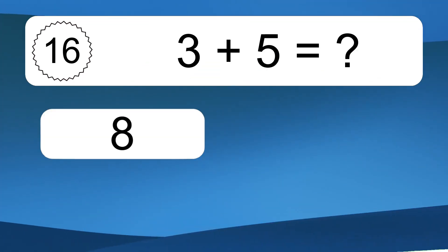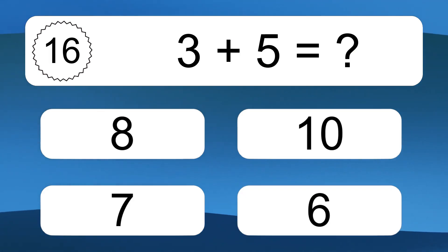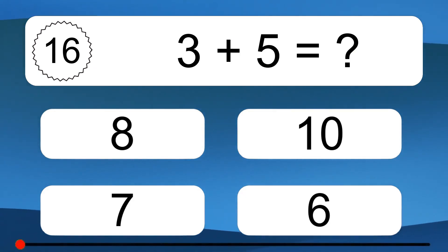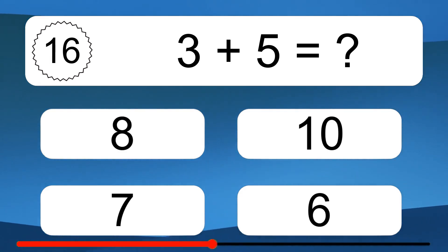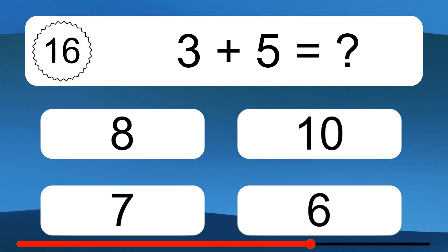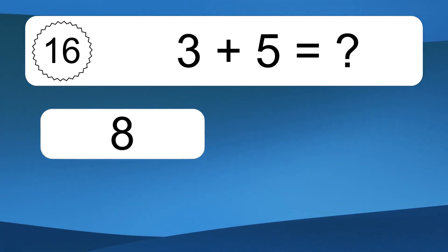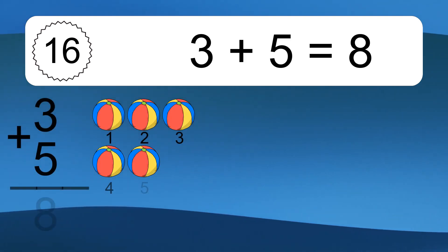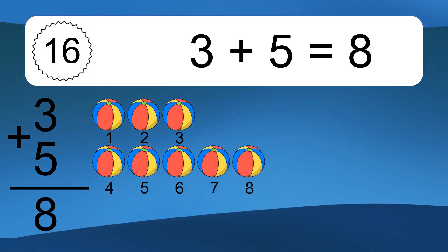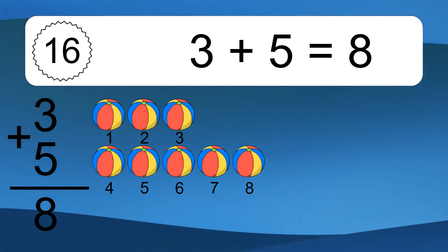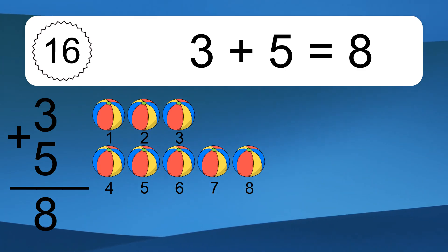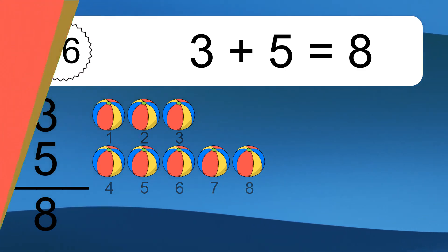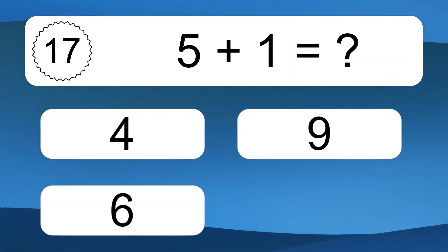3 plus 5 equals what? 3 plus 5 equals 8. Let's count it. 1, 2, 3, 4, 5, 6, 7, 8.